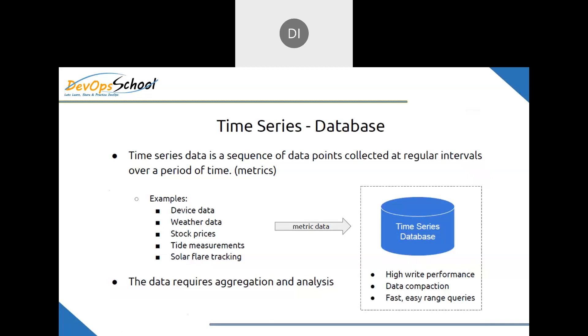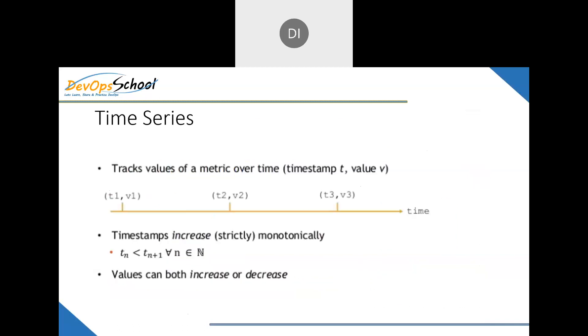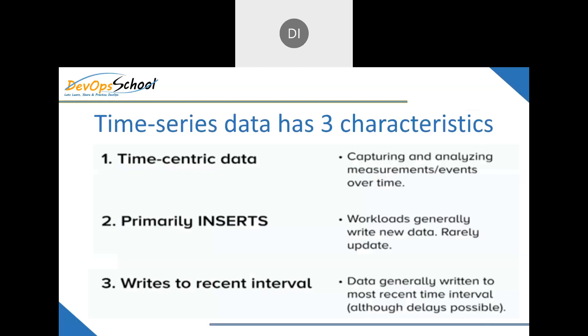In a time series database, at time T1 we collect value V1, then at time T2 we collect V2, and so on at certain intervals. Time series data has three main characteristics: it is time-centric, meaning all data is tied to a timestamp; it is primarily insert-only — you cannot modify or edit the data; and writes happen at a set reset interval.